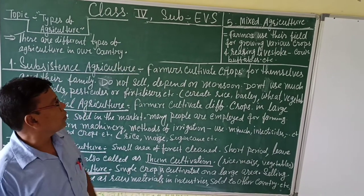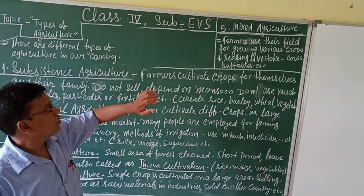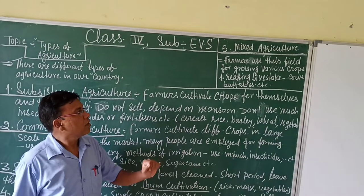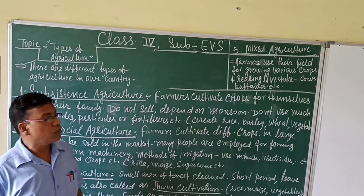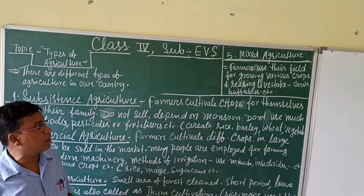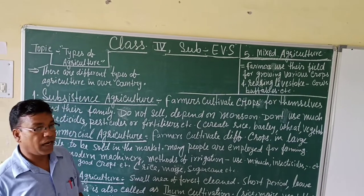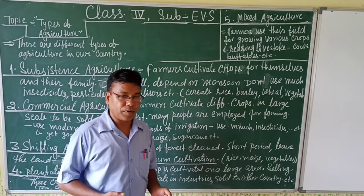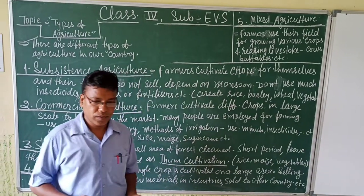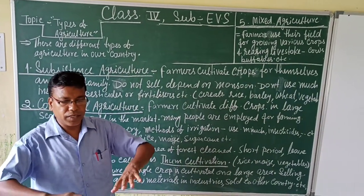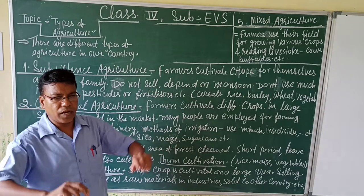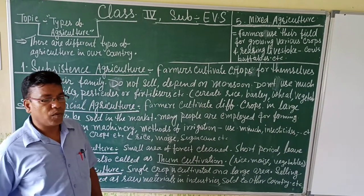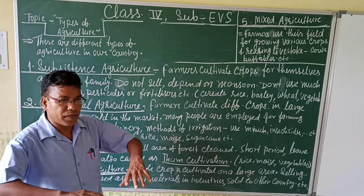Now we move to the fifth point: mixed agriculture. In mixed agriculture, farmers grow crops alongside raising livestock such as cows and buffaloes. Farmers keep many animals and need to feed them, and for that purpose, they also grow fodder crops.